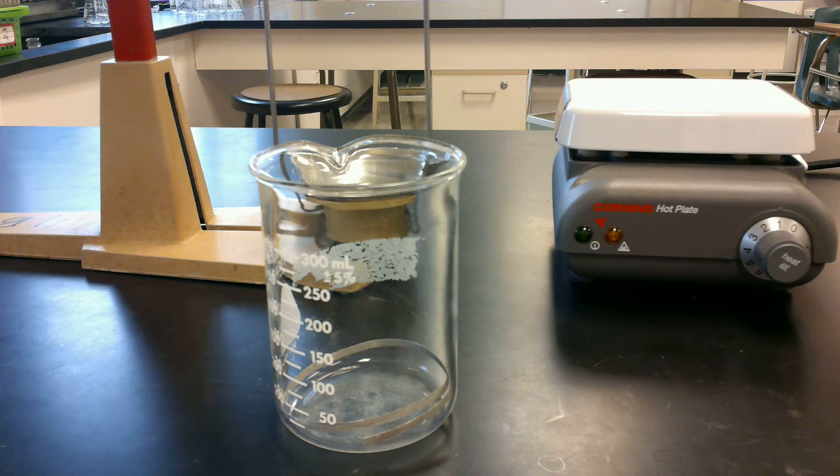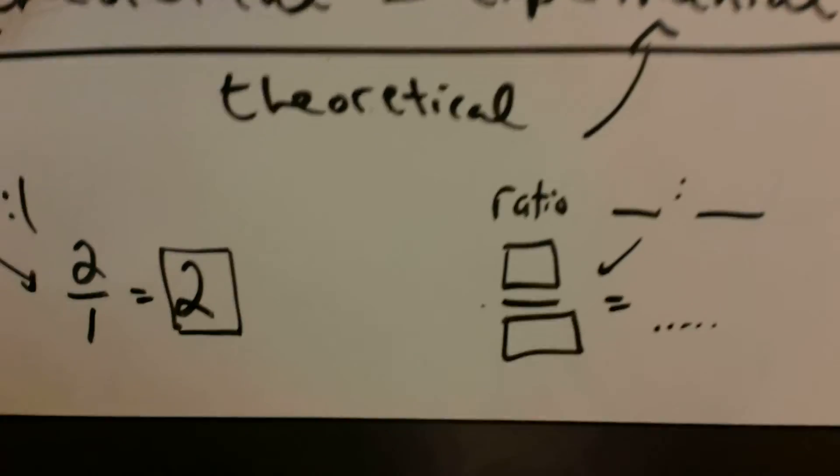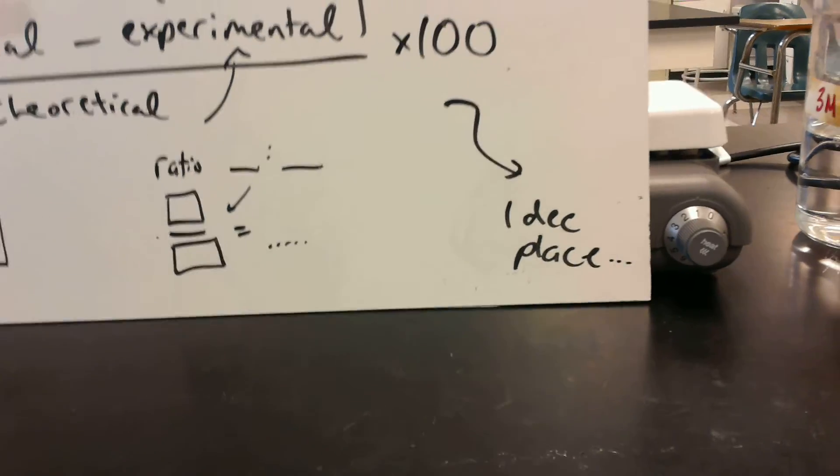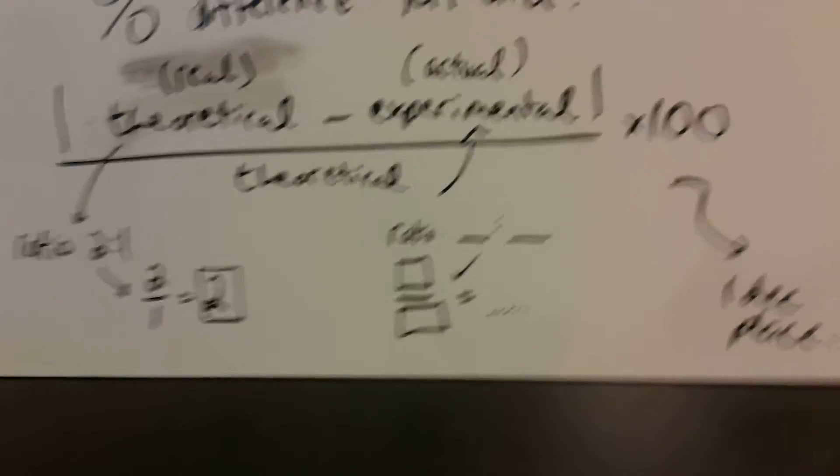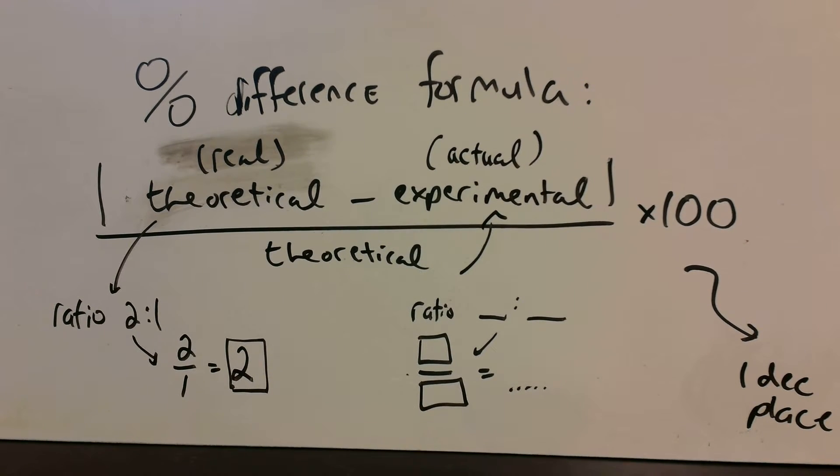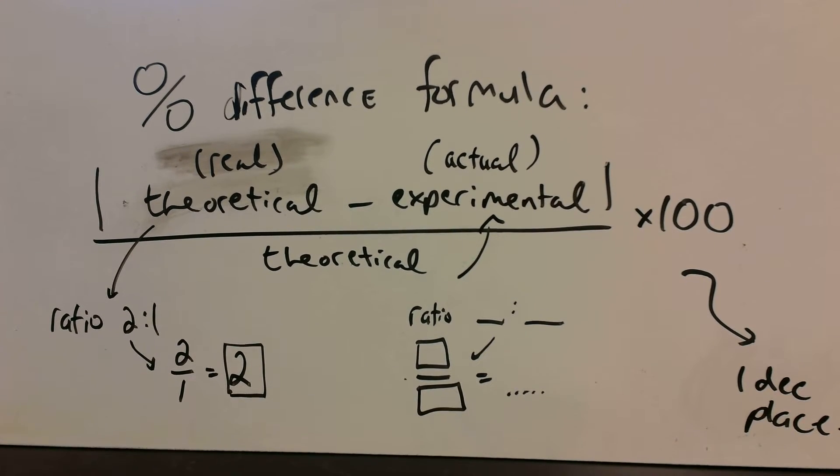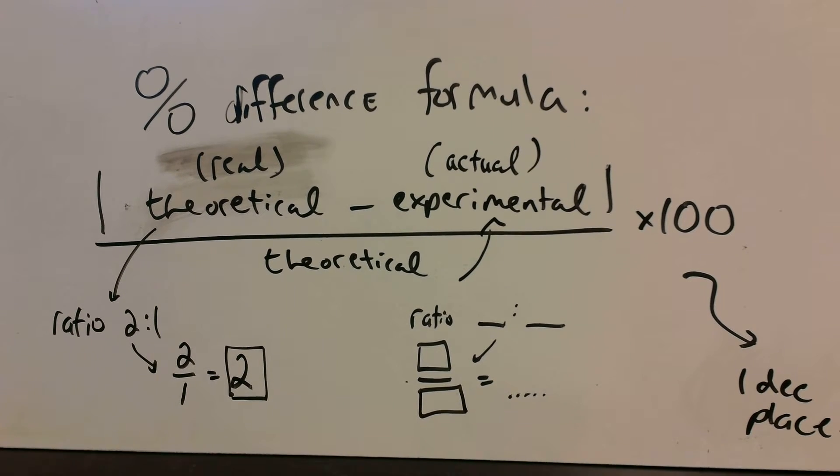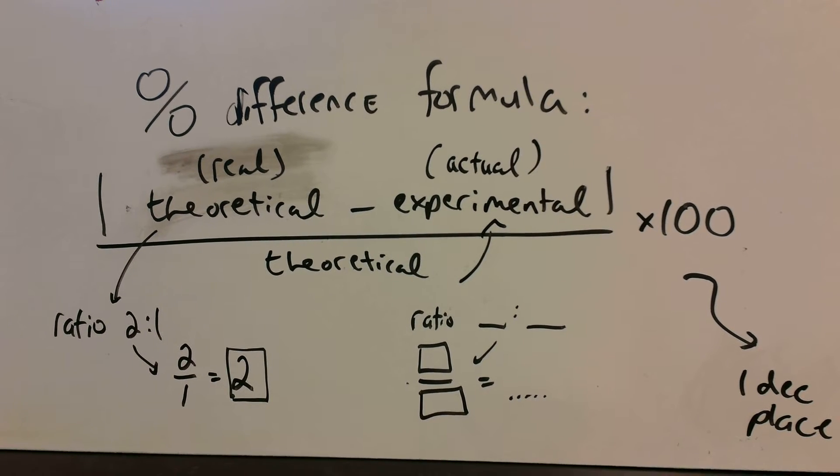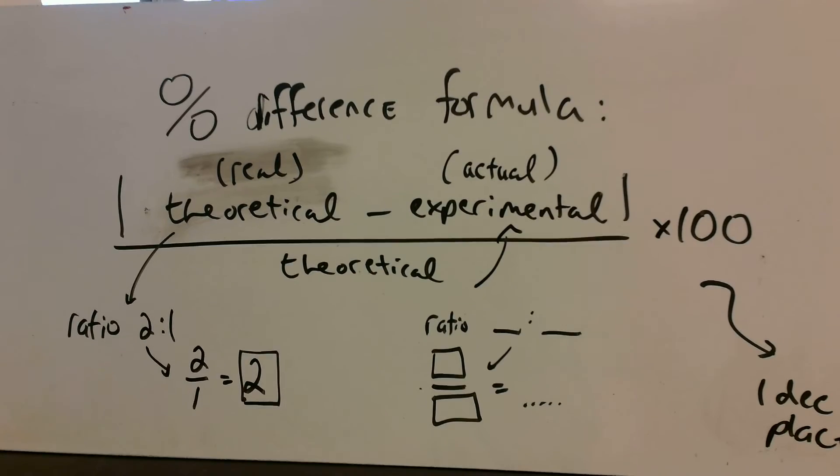And then in the post lab analysis questions, there's a couple on there. The second question has you use a formula for percent difference. So this is the percent difference formula here. So the percent difference formula is a way to compare an experimental value to a value that you should have gotten. So in this experiment, there's a ratio of magnesium to chloride in a compound that you should get. And so based on what we learned about charges and that kind of thing, that should be 2 to 1. Two chlorines for every one magnesium. So that ratio is 2 to 1, which is 2.